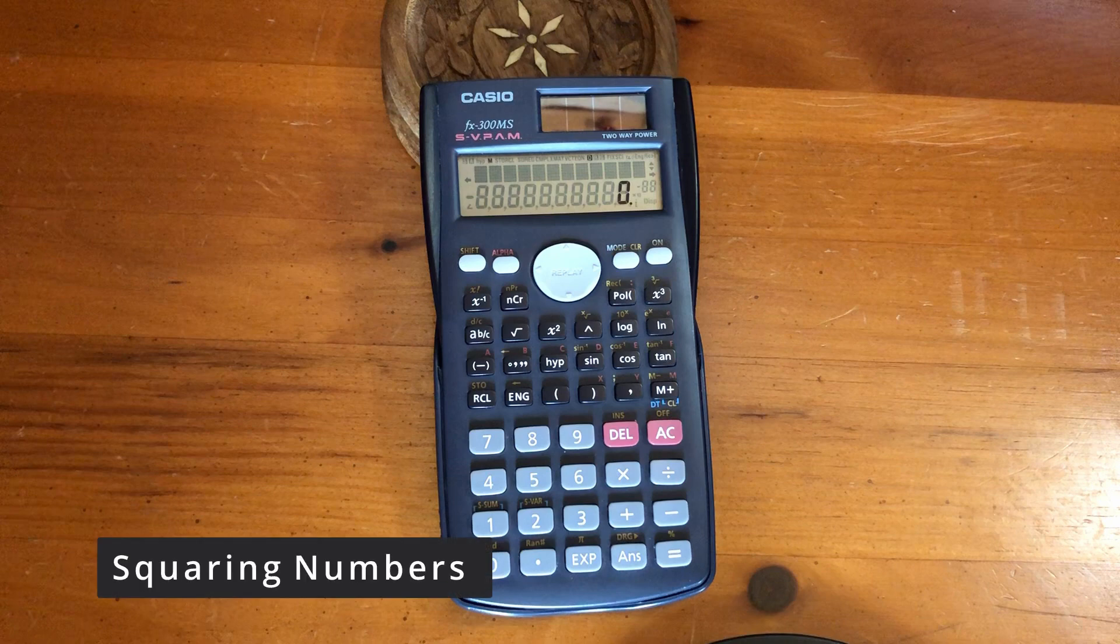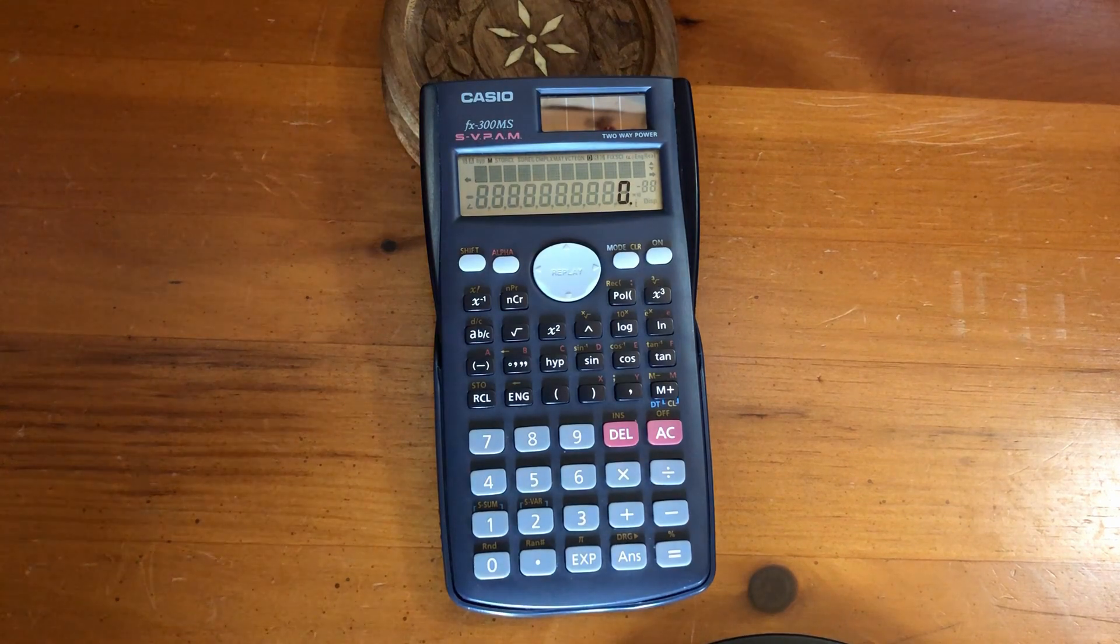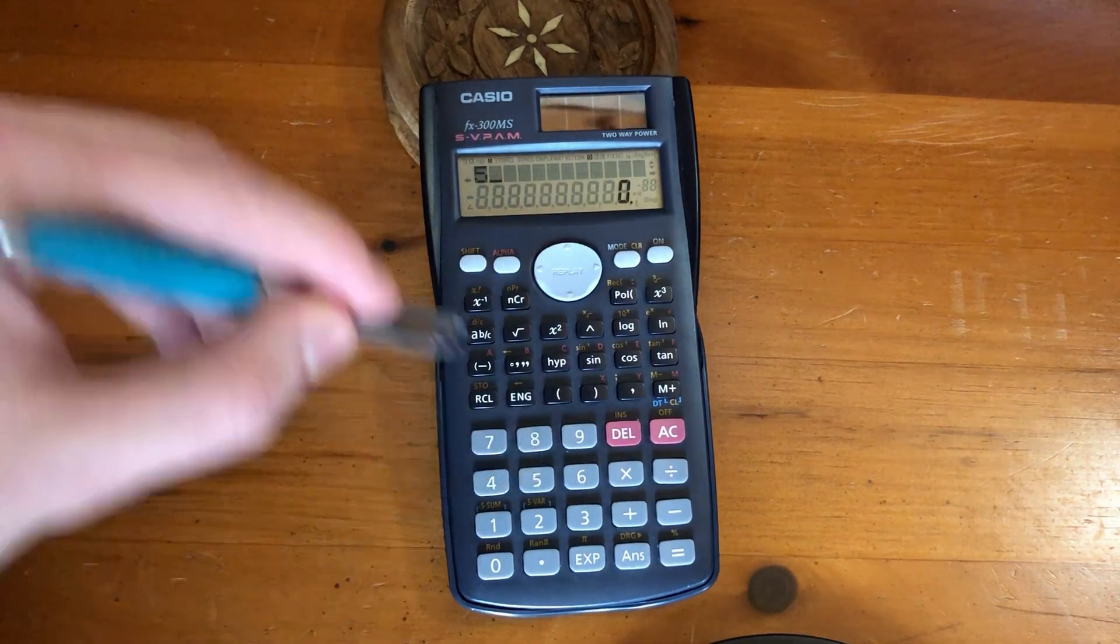Okay, so the first thing we're going to do is square numbers. For instance, 5 squared is 25.